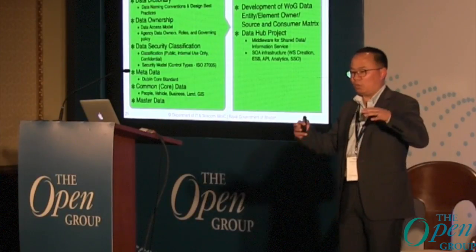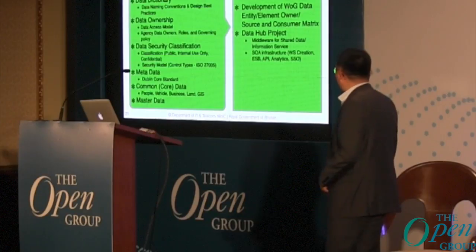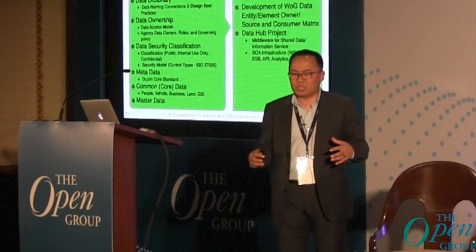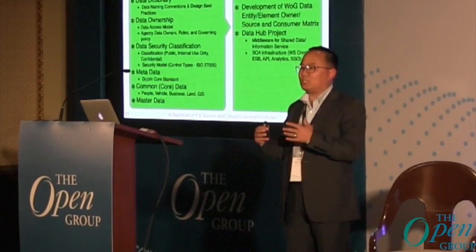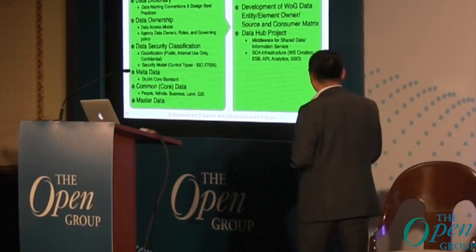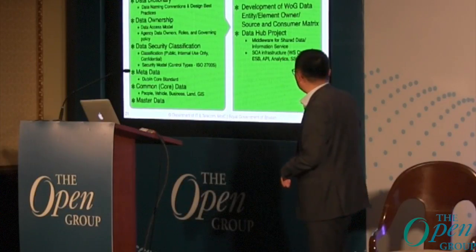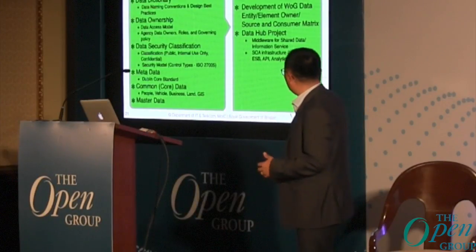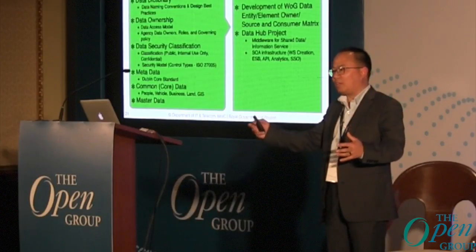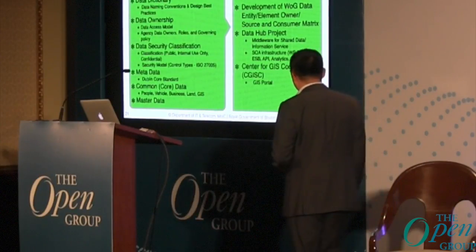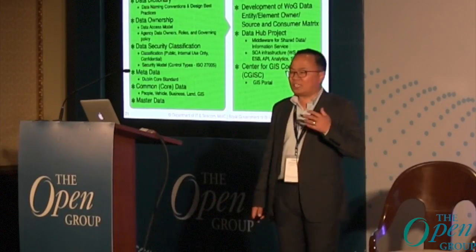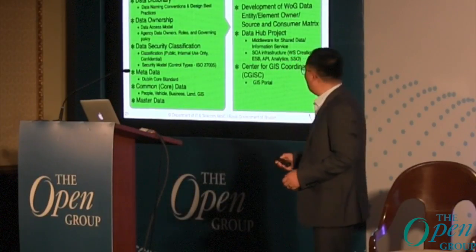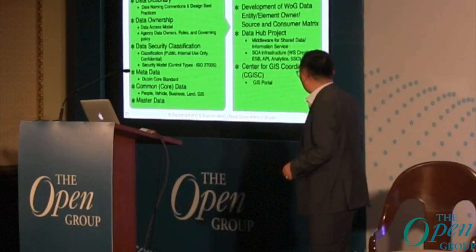The Data Hub project is a very critical initiative we started four months ago. It will create a middleware infrastructure so that all government agencies can share data with each other, using a service-oriented architecture infrastructure — including data service and web service creation, web service routing through an enterprise service bus, and analytics. We also have a center for GIS coordination under the Land Commission, which is building a GIS portal for government agencies to share GIS-related data.